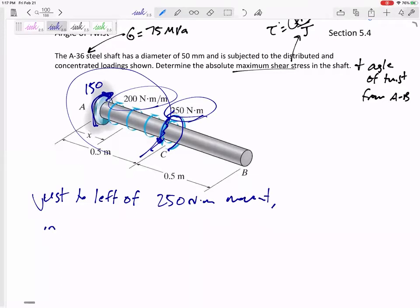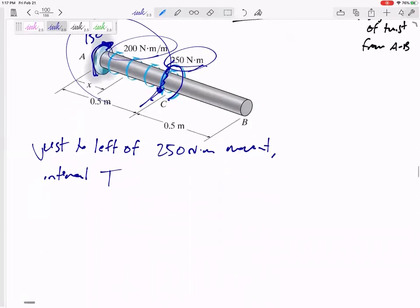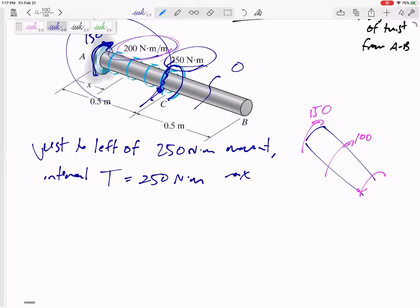I need an internal torque - it's got to counteract that 150 and it's got to counteract this whole 100. Just to the left of 250 Newton meter moment, I would have an internal torque. I've got 150 at the wall. I've got this full 200 Newton meters per meter, so I've got 100 right here. So right before I get to that 250, I'm going to have a torque of 250 Newton meters. And that's the maximum.